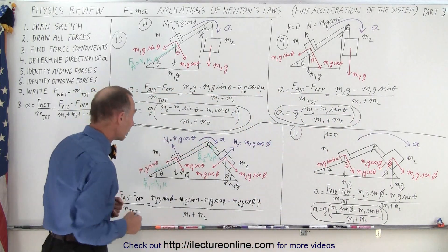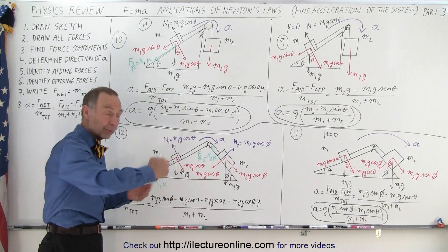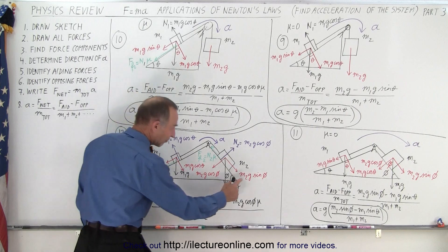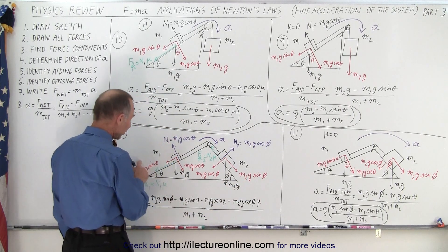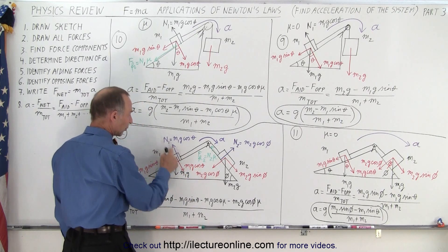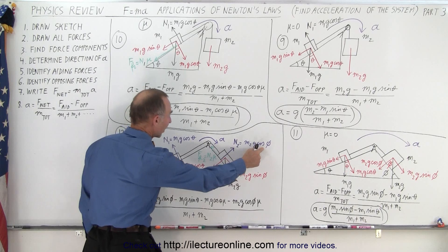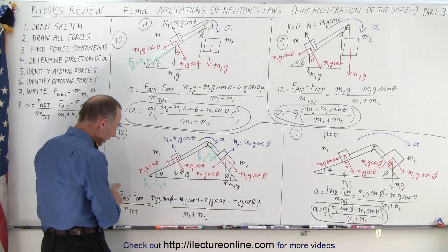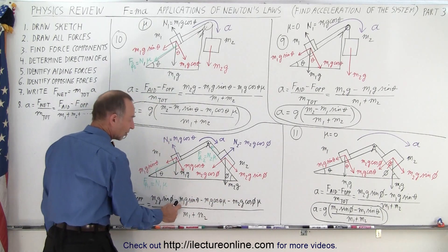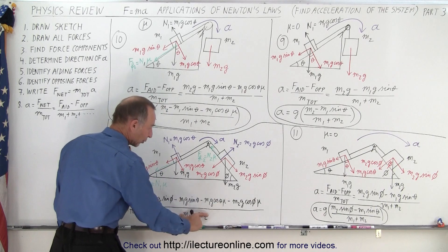If there's friction in the two-incline problem, you now have two friction forces, both acting in the opposite direction of motion. The only aiding force remains M2g sin phi. The opposing forces are M1g sin theta plus two friction forces: the normal force M1g cos theta times mu, and the normal force M2g cos phi times mu. Divide the difference by the total mass of the system to get the acceleration.